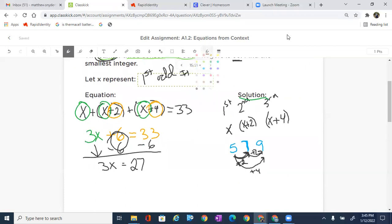And then we are going to divide by three. Three divided by three, X comes out. We get 27 divided by three, which is nine.